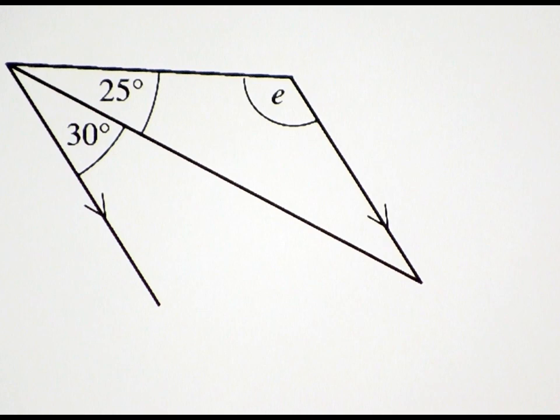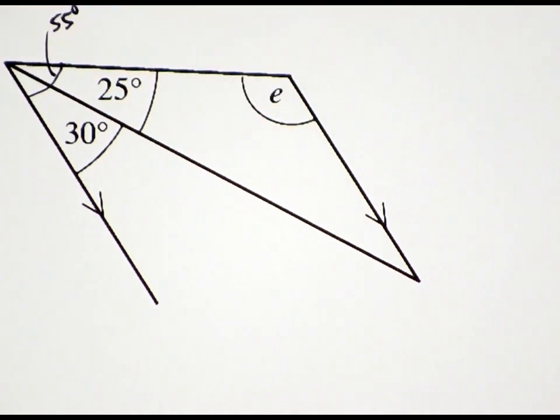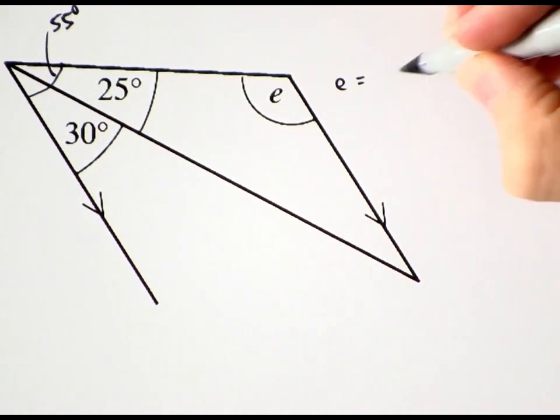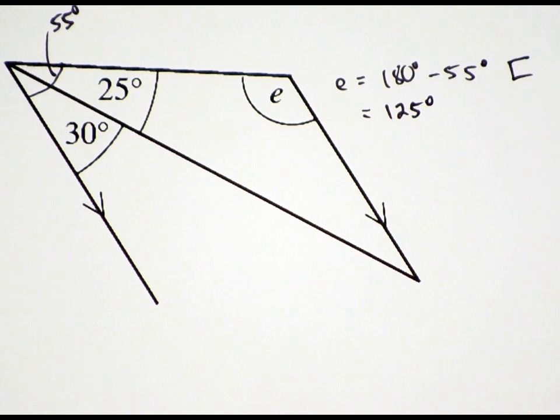Let's use the first method. Thirty and twenty-five add to fifty-five degrees, so E must be 125 degrees. Happy problem solving!